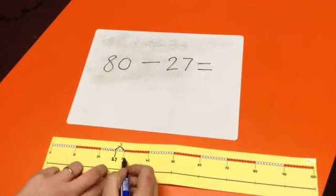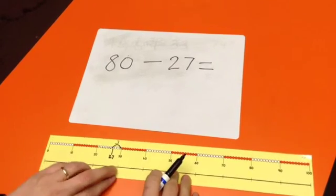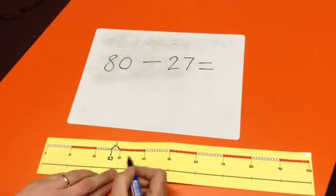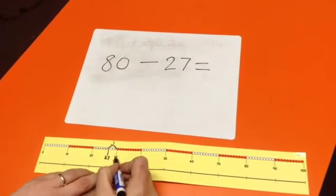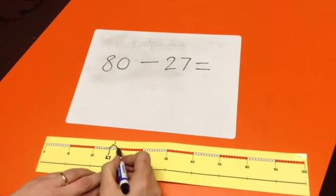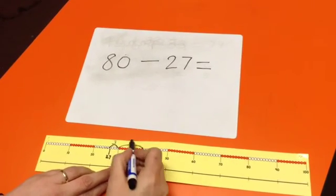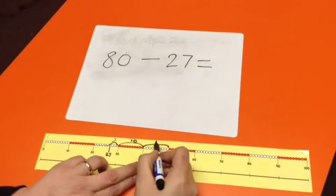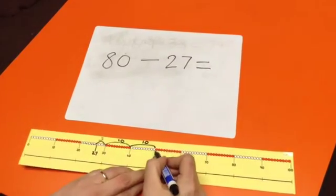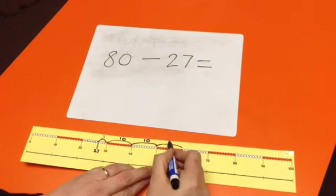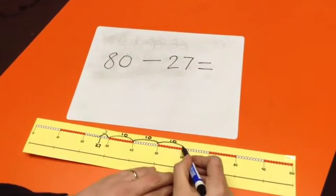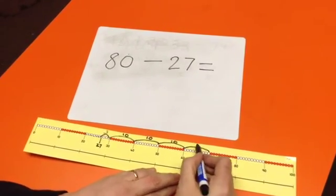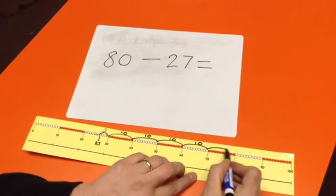From there, this part of the sum becomes much more simple, providing the child can count in tens. We jump from 30 to 40, which gives us a jump of 10. From 40 to 50, giving us another jump of 10. From 50 to 60. From 60 to 70. And from 70 to 80.